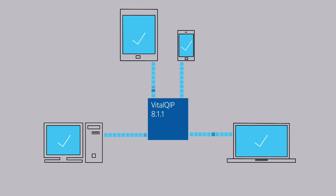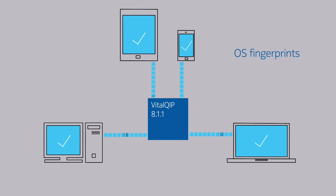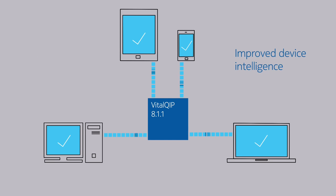Vital QIP can be updated with MAC address to IP mappings, SNMP collected information, operating system fingerprint information, and open ports information for improved device intelligence.